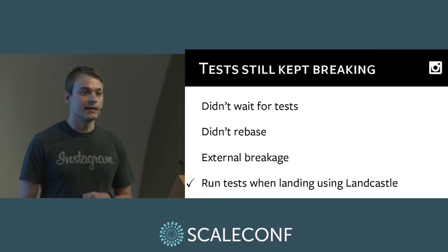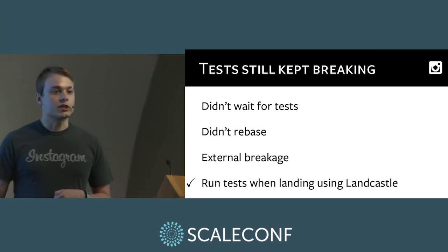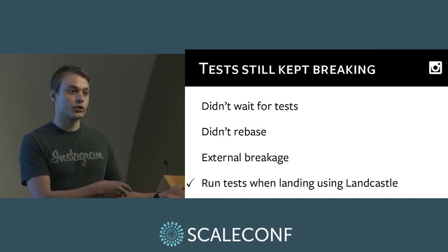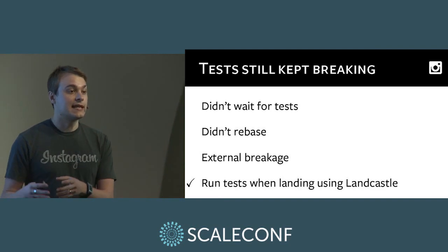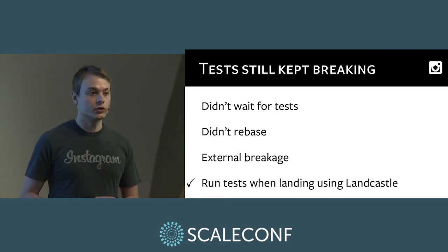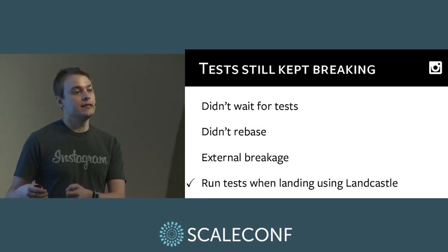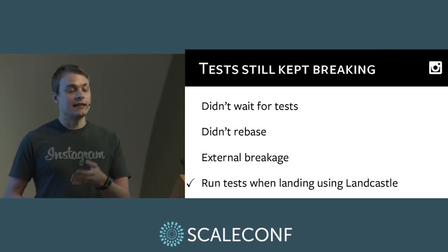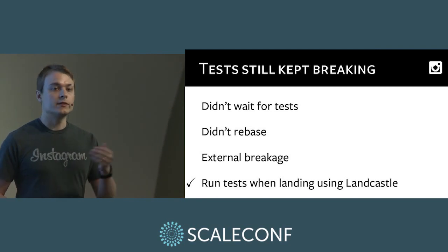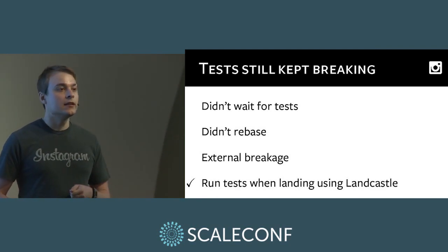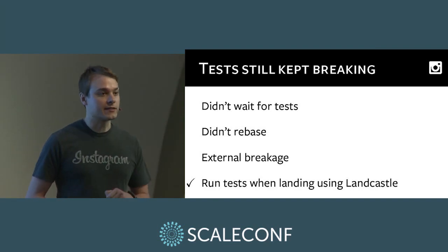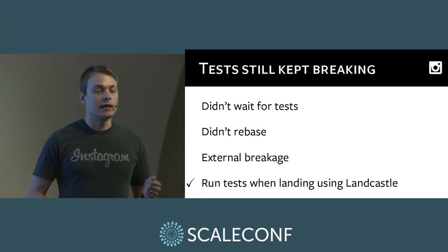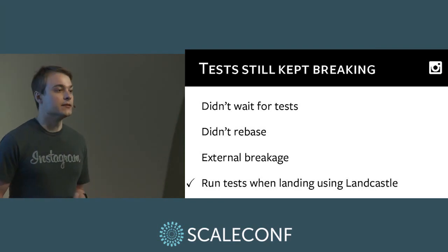The solution was to run tests during landing. As part of Sandcastle's functionality, there's something called Landcastle — instead of doing a local git merge and push to master, you create a Landcastle job containing a git bundle of your change. Landcastle asynchronously creates a branch, rebases it, and pushes to the server on your behalf. Critically, we got Landcastle to run the entire test suite before doing the push. If any tests failed, it would fail the land and the change would not get into master. This meant we enforced a clean test run on freshly rebased code before anything got into master, and this pretty much eradicated test failures in master.